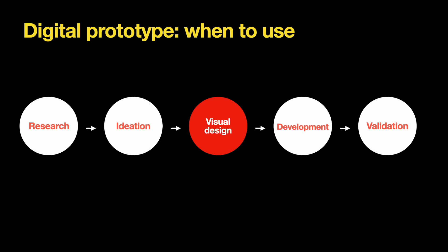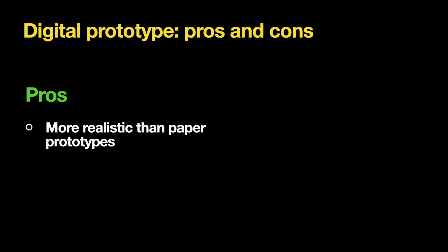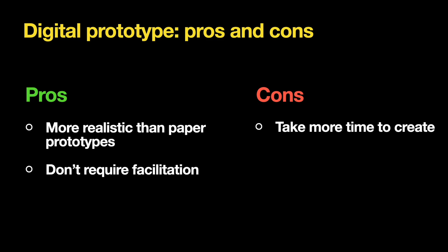Digital prototyping typically happens during the visual design phase, when you have visual styles such as colors and fonts, as well as realistic text copy, and want to see how everything works together. Digital prototypes give you a much better feel of how the final product will look, and users can interact with them on their own — making them great for pitching ideas to stakeholders or conducting usability tests. However, they require more time to create and require special design tools such as Figma or Sketch.